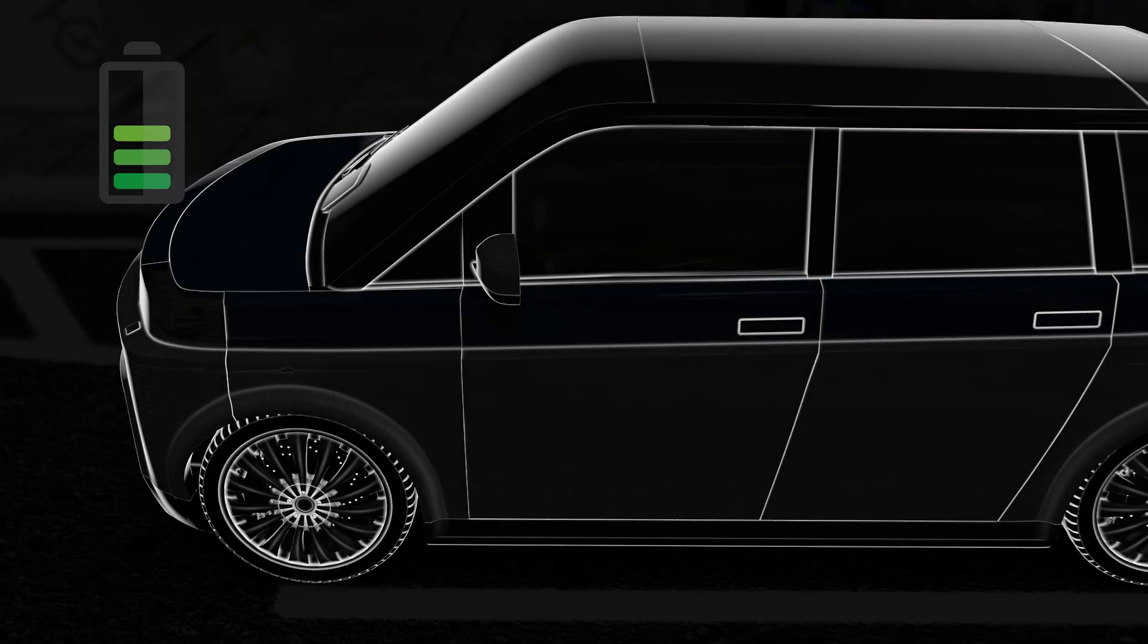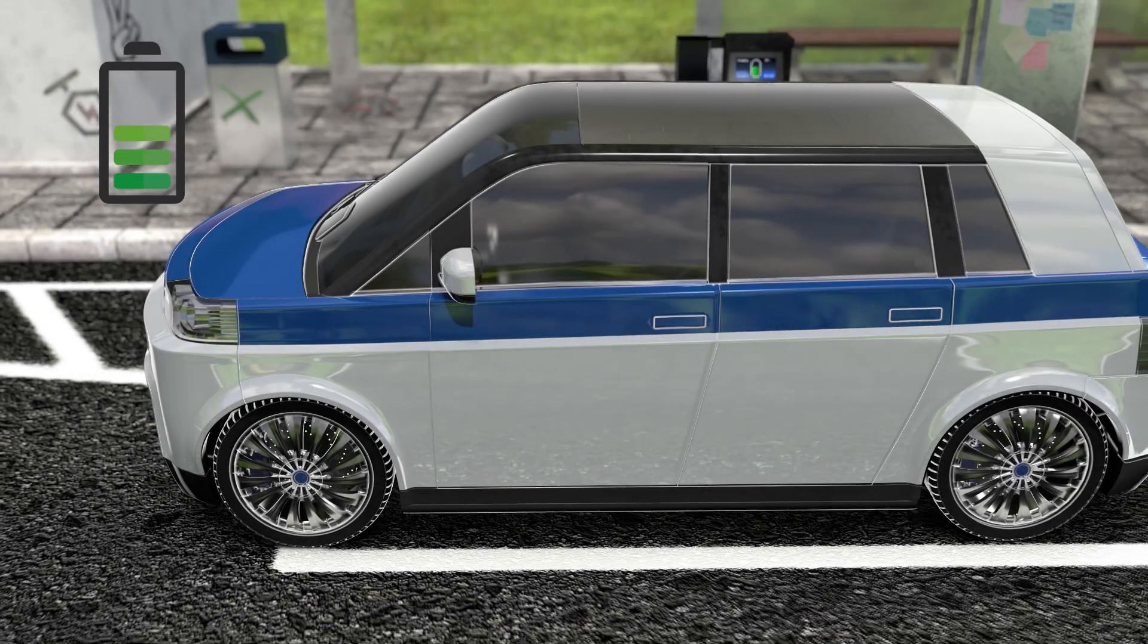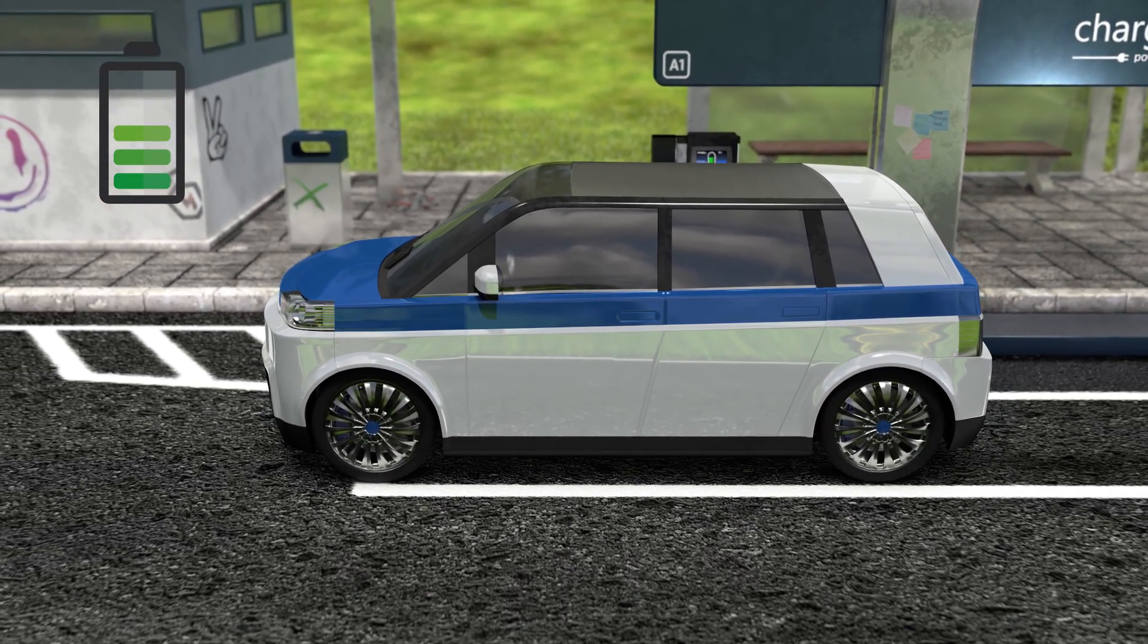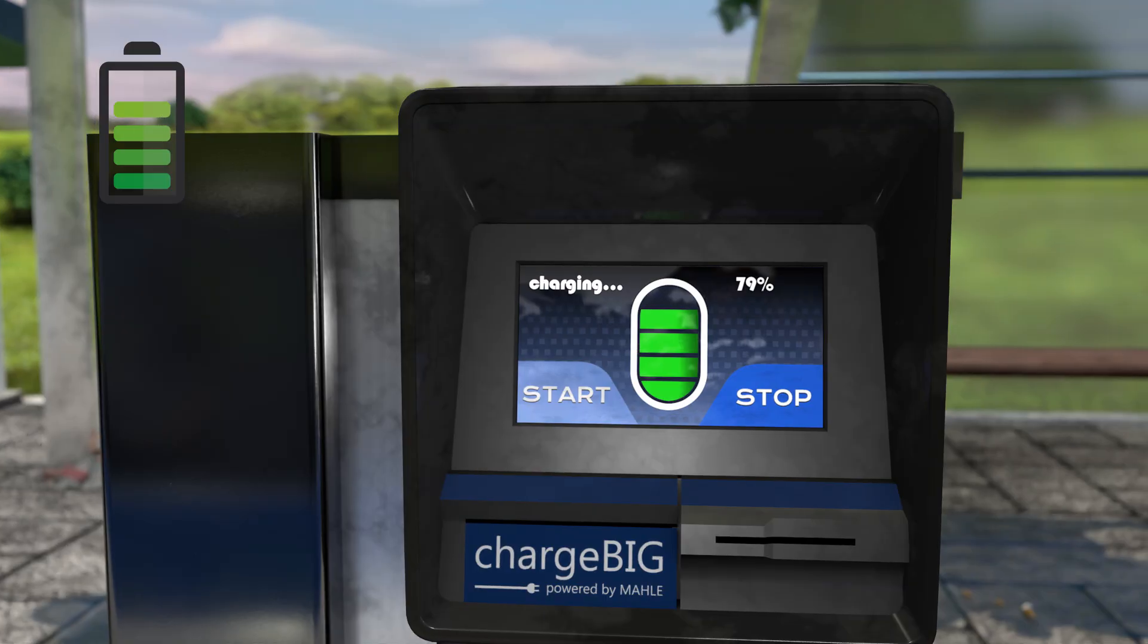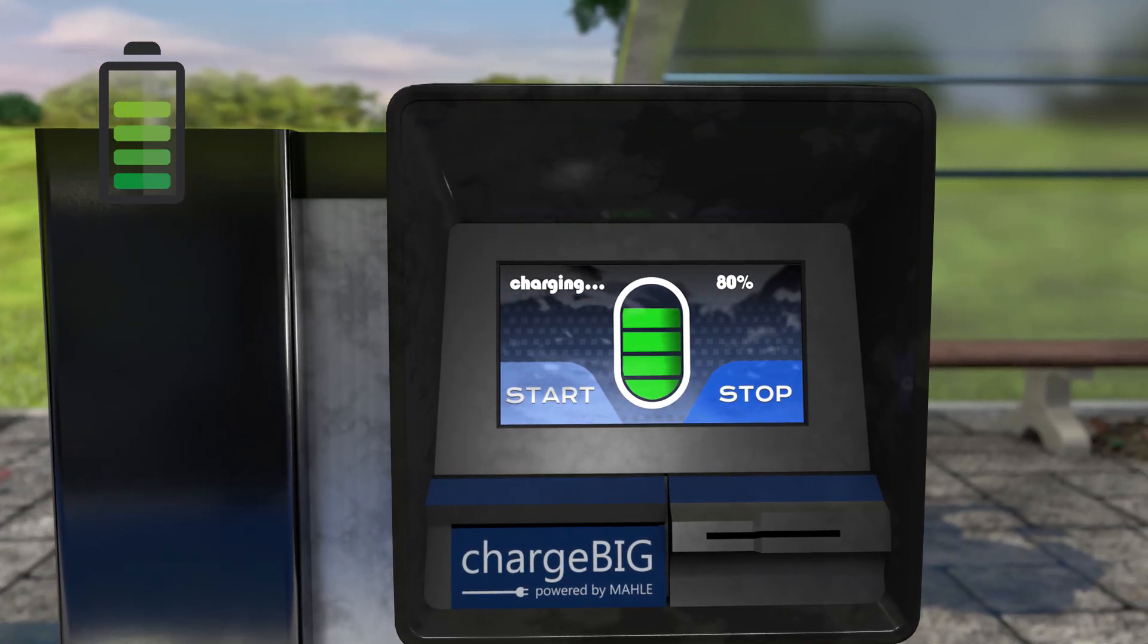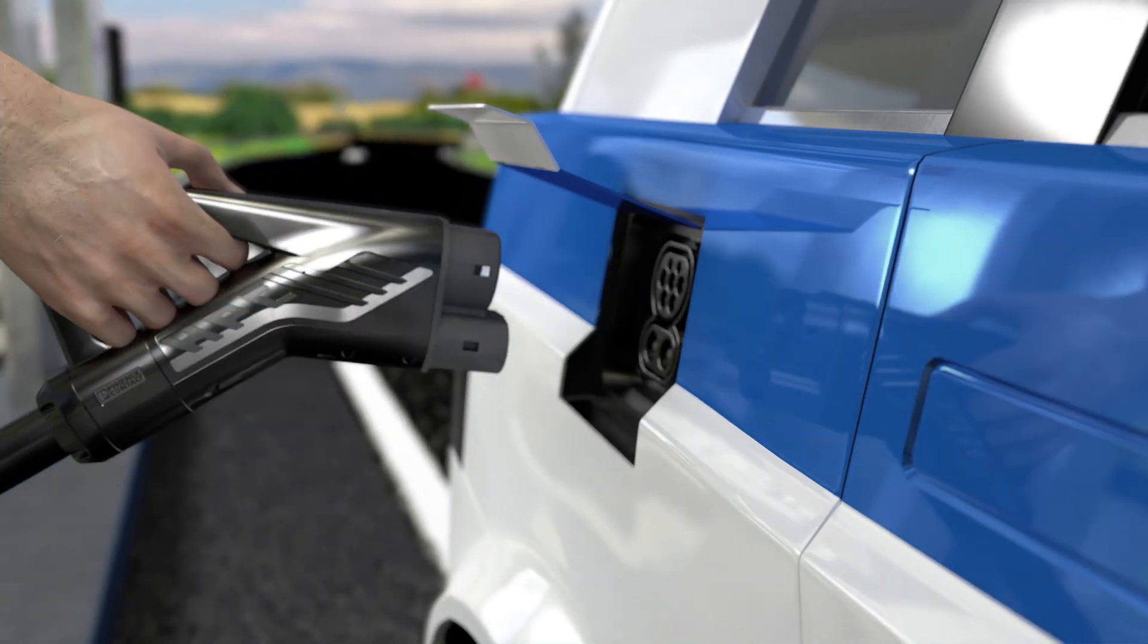When the battery is about 80 percent full, the battery management system has to reduce the charging power to such an extent that the charging process stops. The electric car is now ready to continue its journey.